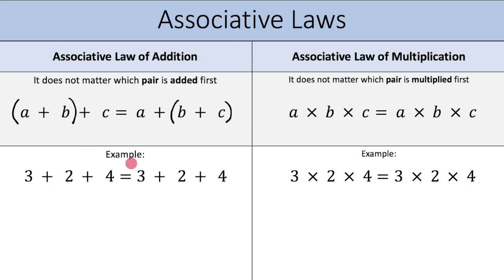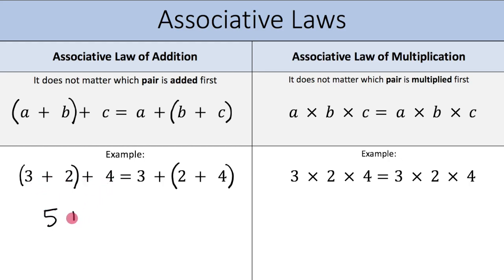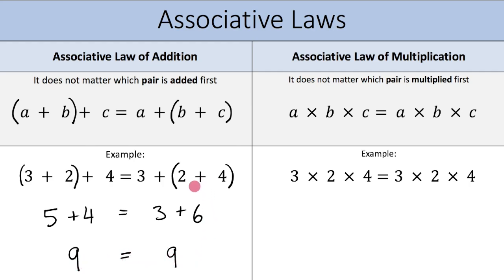Let's now do an example together. We have 3 plus 2 plus 4 equals 3 plus 2 plus 4. On the left side we pair up 3 and 2: so (3+2) plus 4 gives 5 plus 4, which is 9. On the right side we pair up 2 and 4: so 3 plus (2+4) gives 3 plus 6, which is 9. And 9 equals 9, which means the associative law of addition works — it does not matter which pair is added first.